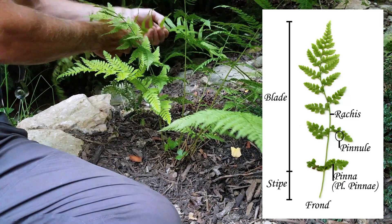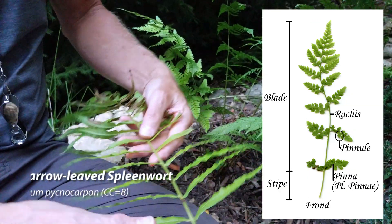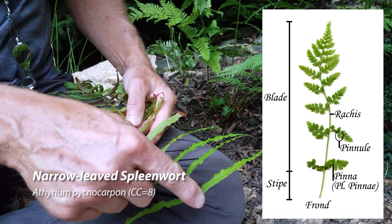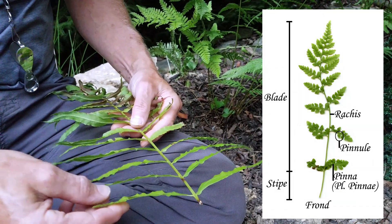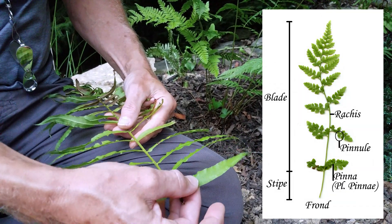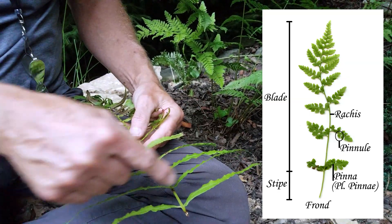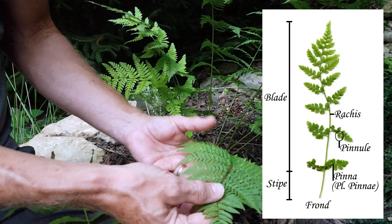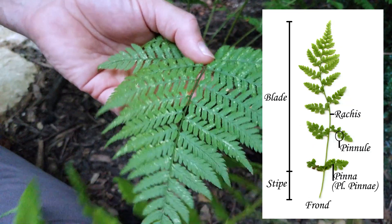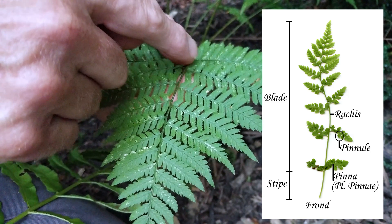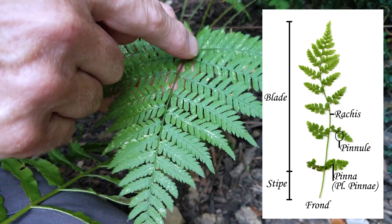The blade can be either divided or less divided. Here's a narrow-leafed spleenwort. This and Christmas fern are good examples of something that is once divided — you have the center stem called the rachis, which the pinnae are attached to. If each pinna is further divided into separate pinnules, it's twice divided. You can see how that's twice divided here.